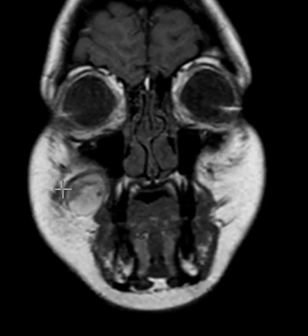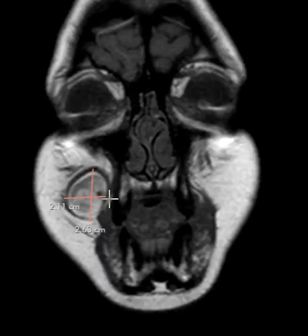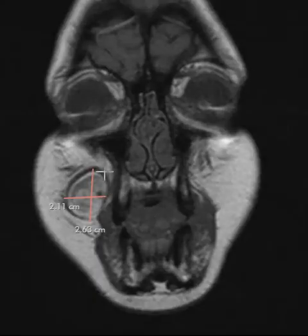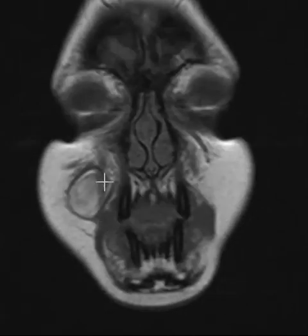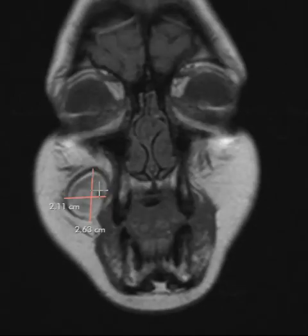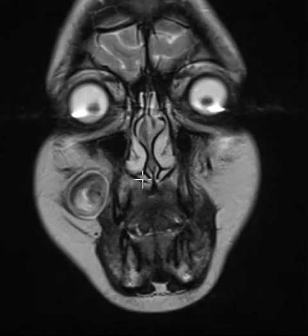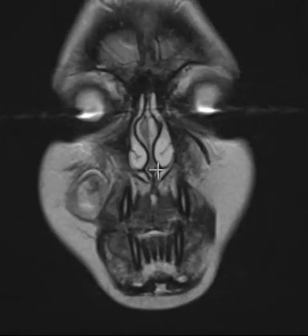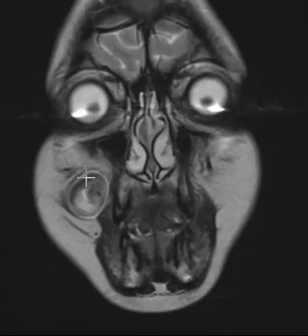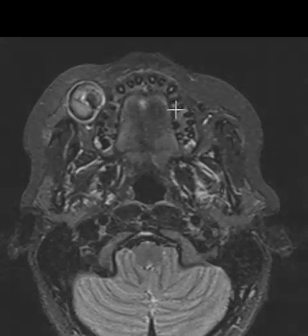Here is the lesion right there. Really sharply defined margins and sort of mixed signal intensity within it. Another sequence showing the same thing here. And finally, this sequence has got a STIR sequence, so fat is now dark.